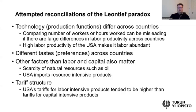Finally, the Heckscher-Ohlin model in its basic form assumes away both transport costs but also other impediments to trade such as tariffs. When explaining the Leontiev paradox, some researchers have also pointed out that US tariffs for labor intensive products tended to be higher than tariffs for capital intensive products. This kind of tariff structure can give some bias, influencing the empirical observations to differ from the predictions of the theory.